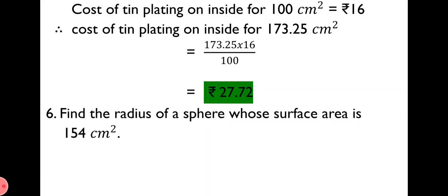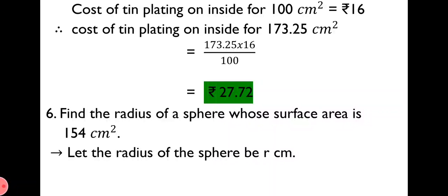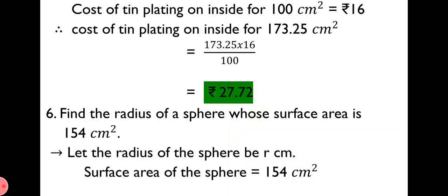Next, question number 6. Find the radius of a sphere whose surface area is 154 cm². Here, the surface area of the sphere is given as 154 cm², and using that we have to find the radius. For solution, let the radius of the sphere be r cm. It is given that surface area of the sphere = 154 cm², and we know that the formula for surface area of a sphere is 4πr². Therefore, we write 4πr² = 154.